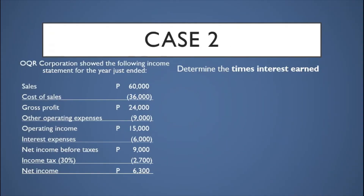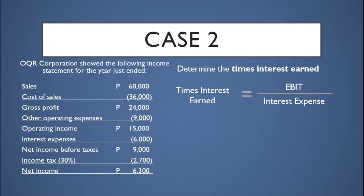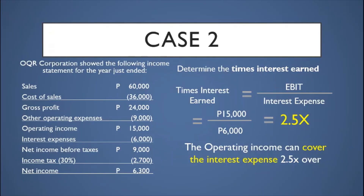OQR Corporation's income statement for the year just ended is used to determine the TIE ratio. TIE equals EBIT over interest expense — EBIT is the income figure before deduction of interest and taxes. In this case, operating income of ₱15,000 is used as EBIT, divided by interest expense of ₱6,000, giving a TIE ratio of 2.5 times. Interpretation: OQR Corporation's operating income can cover its interest expense 2.5 times — more than sufficient to cover financing costs.